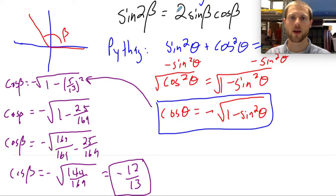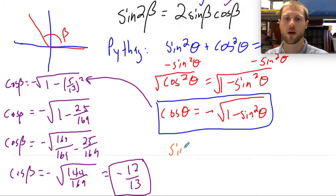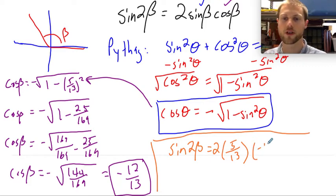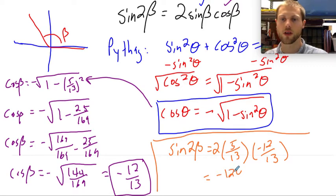All right, so now I'm going to take this cosine of beta and plug it into this formula, which I now have all of my components of. And let's do that in orange. So the sine of, let me separate this a little bit here. The sine of 2 beta is going to equal 2 times the sine of beta, and we said that was 5 thirteenths, times cosine of beta, which is negative 12 thirteenths. And that's going to equal 2 times 5 is 10 times 12 is negative 120 over 169.